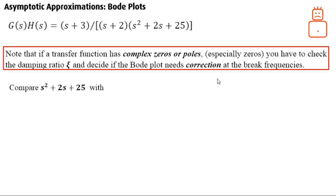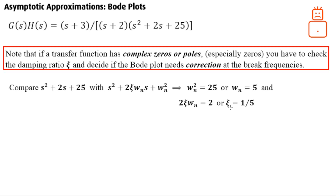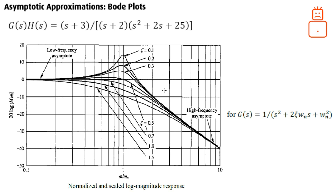This transfer function has two complex poles. Comparing it with the standard form, we can compute the natural frequency, which is five, and the damping ratio z, which is one over five — less than one. Since it is less than one, the final Bode plot will need a correction to the magnitude portion.